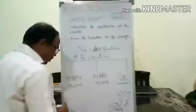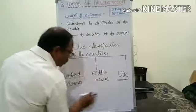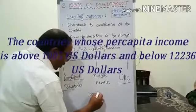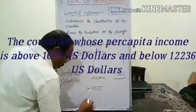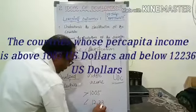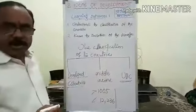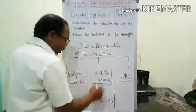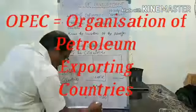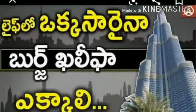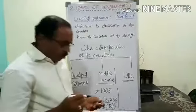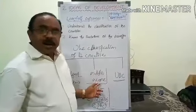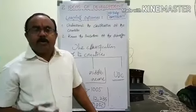Middle-income countries are those whose per capita income is above 1,005 US dollars and below 12,236 US dollars per annum. Particularly, OPEC countries — Organization of Petroleum Exporting Countries — come under the category of middle-income countries. This is the classification of countries of the world based on per capita income.